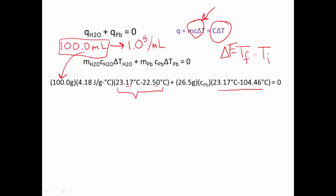So we end up with two sig figs. Our other delta T, the 23.17°C minus 104.46°C, that ends up being negative 81.29°C. So that helps us figure out our sig figs a little bit.